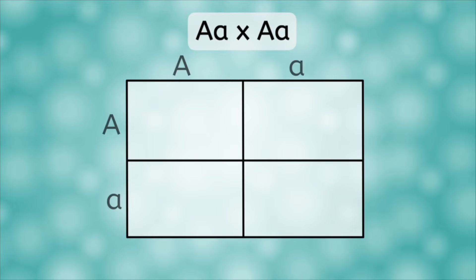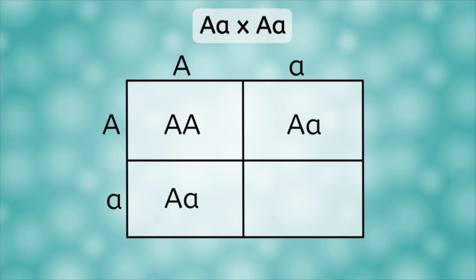We place the parental genotypes at the top and left of the table, one letter per row or column. Next, we fill in the boxes of the table to represent possible allele combinations for the offspring. To do this, simply look up and look left. You'll see a letter in each place. Copy it into the box. For our first box, we have big A at the top and big A at the left, so this box is big A, big A. We do the same for the other boxes and get big A, little a, then another big A, little a, and finally, little a, little a.